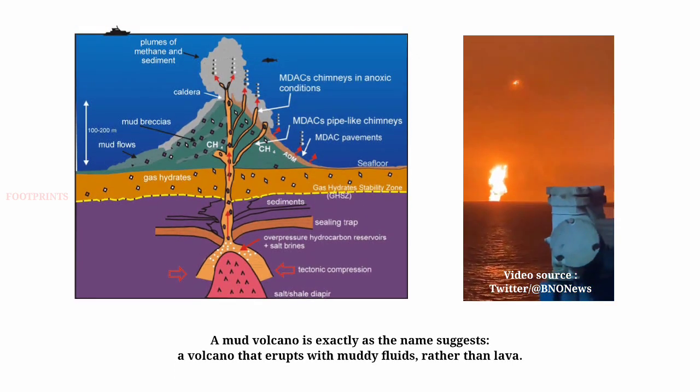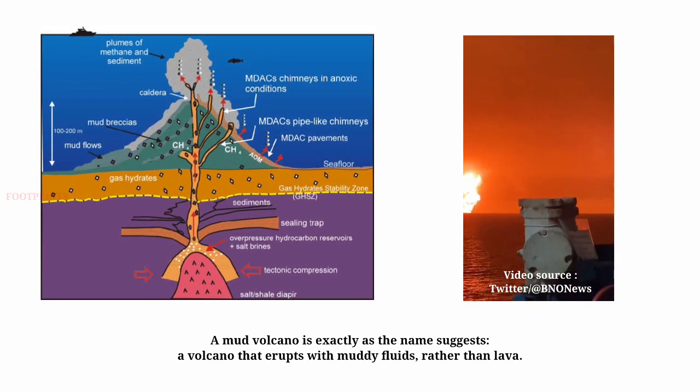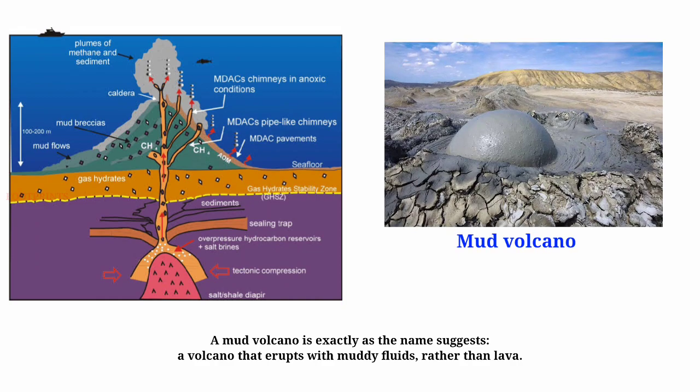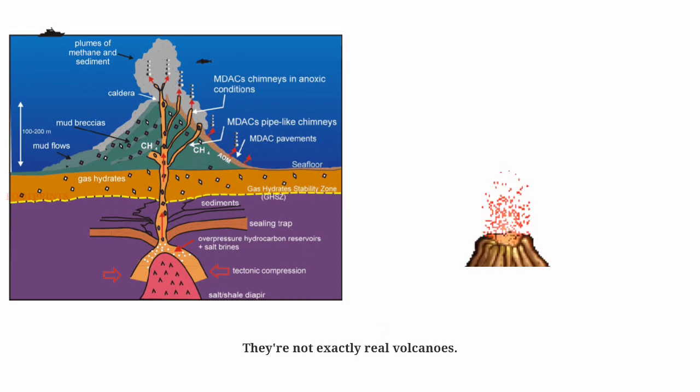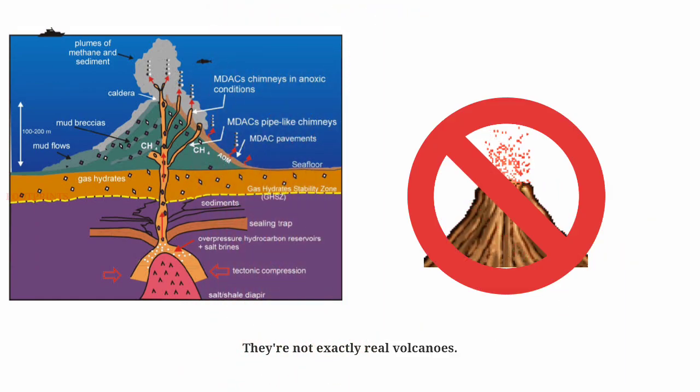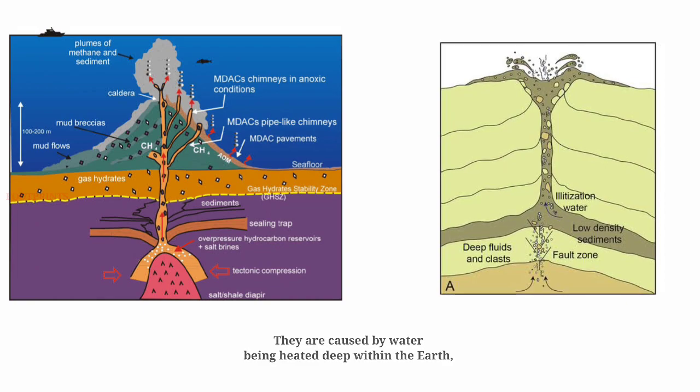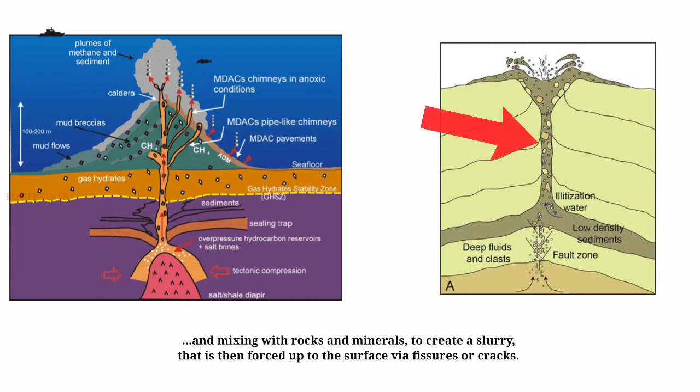A mud volcano is exactly as the name suggests - a volcano that erupts with muddy fluids rather than lava. They're not exactly real volcanoes. They are caused by water being heated deep within the earth and mixing with rocks and minerals to create a slurry that is then forced up to the surface via fissures or cracks.